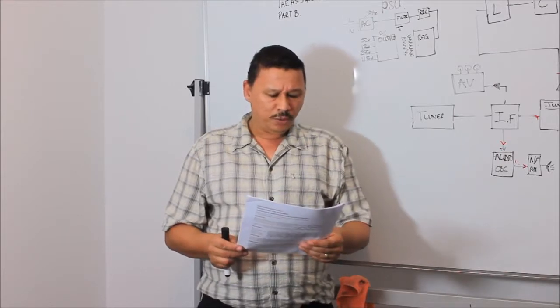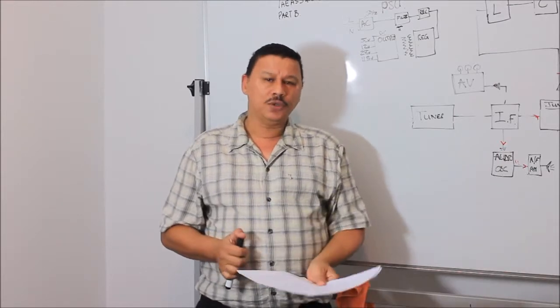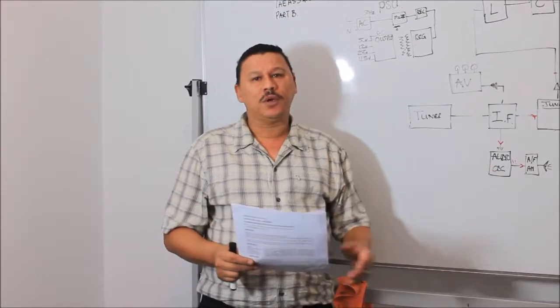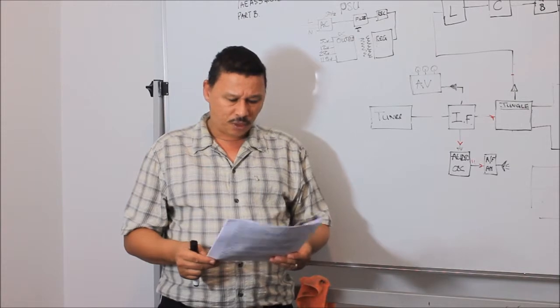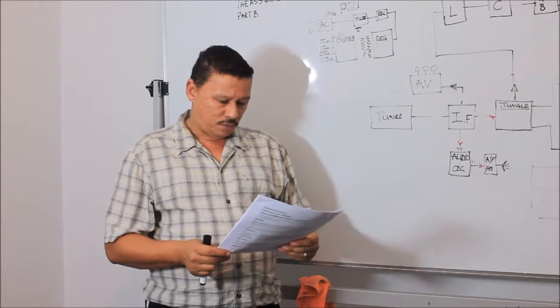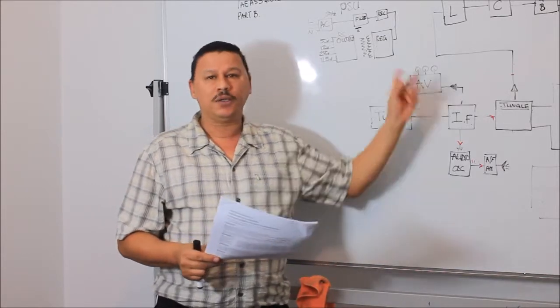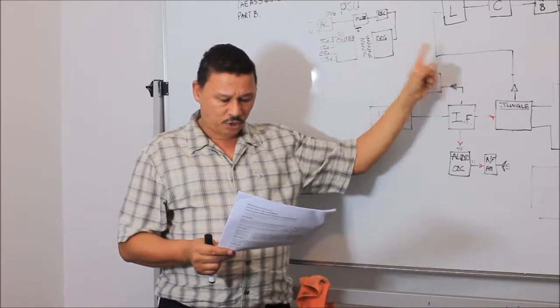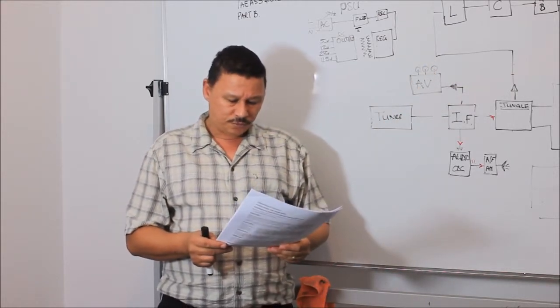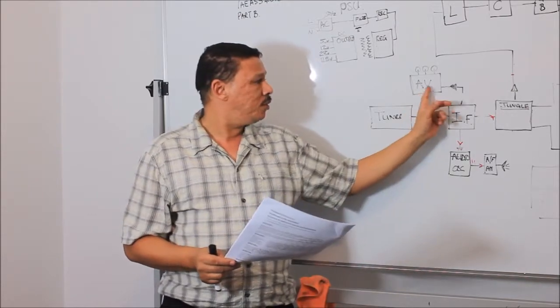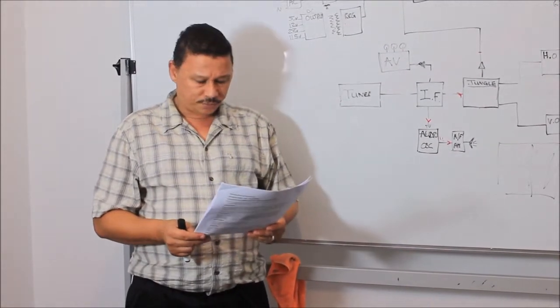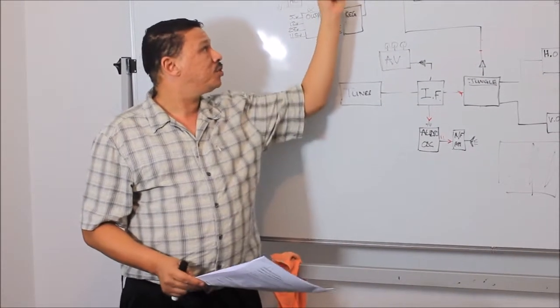Now we go to element two. Element two refers to the specific knowledge of the different block diagrams on the television. First question. Draw a block diagram of a color television. You should be able to draw a block diagram of a color television. Please fill in all names and all arrows of how the signal actually follows, including the power supply unit.